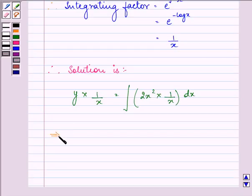This implies y upon x equals 2x² upon 2 plus c.